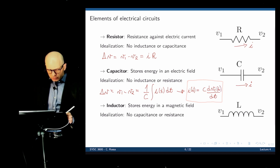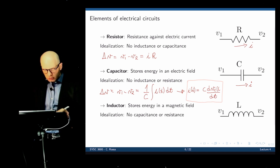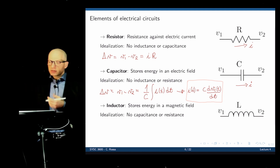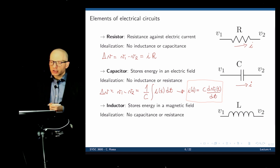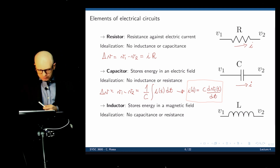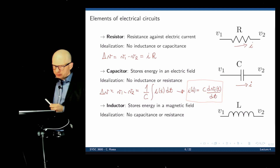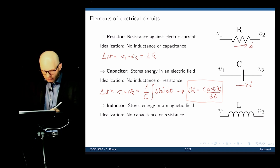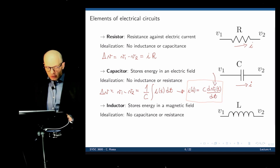When the voltage across the capacitor is constant, there is no current through it, because dV/dt — the derivative of a constant — is zero. That is to say, in a DC circuit where all voltages are constant, no current flows through the capacitor, and it becomes an open circuit.